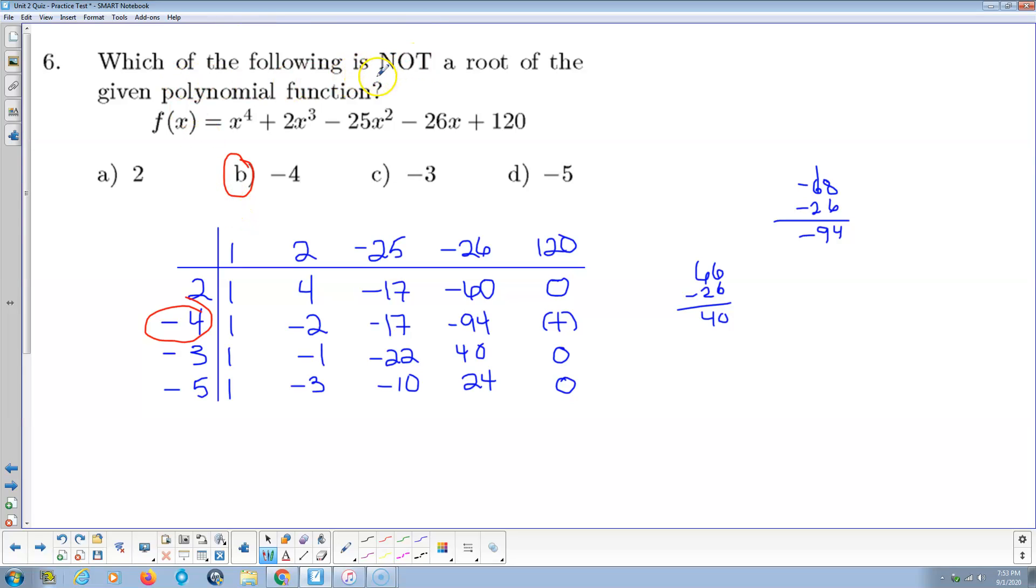What's not a root of the polynomial function here? So coefficients 1, 2, negative 25, negative 6, 120. 1, 2, negative 25, negative 6, 120. I'm just going to try all these numbers, the divisors. 2, negative 4, negative 3, negative 5, in that order. Notice we put 2 in, we get 0 for a root, that's a factor.